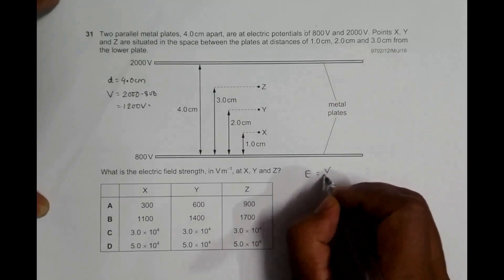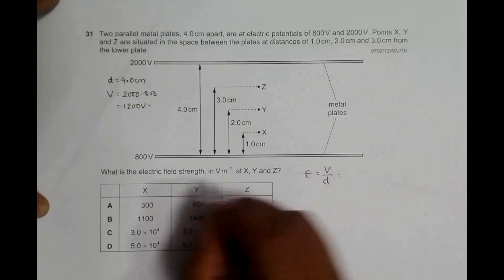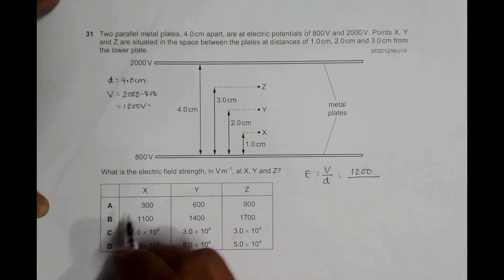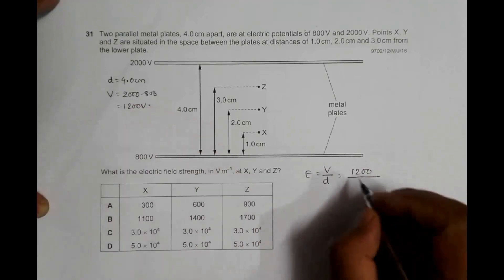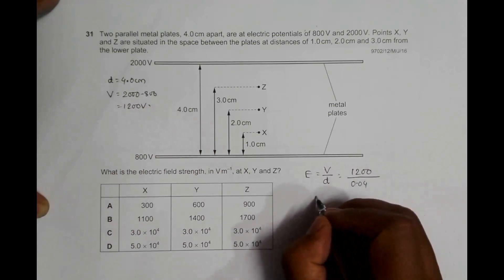And that V is the potential difference, which is equal to 1200 divided by D. D is equal to 4 centimeters, which is equal to 0.04 meters.